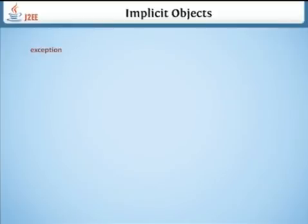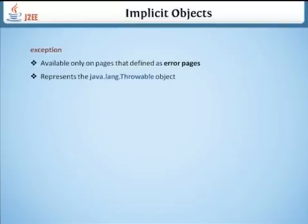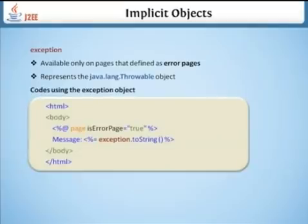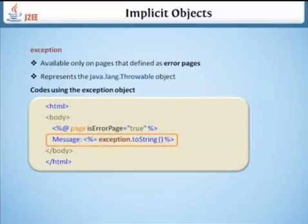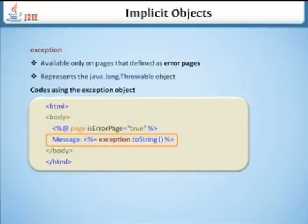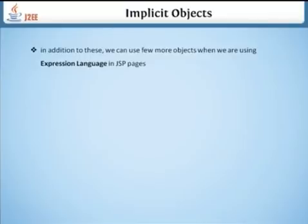Next is Exception. It is available only on pages defined as error pages. It represents the java.lang.Throwable object. We can get the message using exception.toString(). In addition to these, we can use a few more objects when using the expression language in JSP pages.